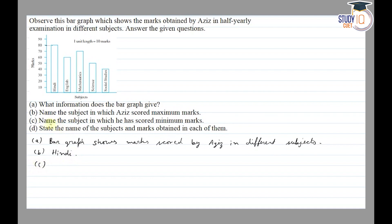Part C is name the subject in which he has scored minimum marks. So minimum marks we have got here, which is 40. So the answer is Social Studies.